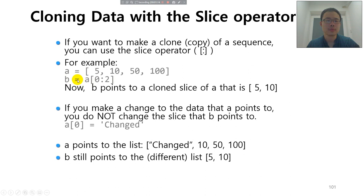So if you do this, B equals from A from 0 to 2, you will have 0, 1, not 2. The last index, the value of the last index will not be included in the slicing in the new list. So you will find that B points to a cloned slice of A, that is 5, 10.